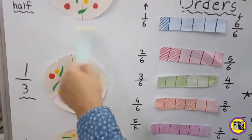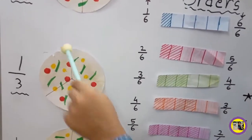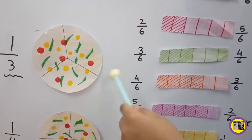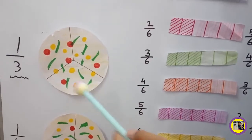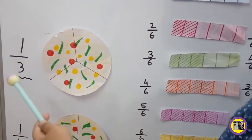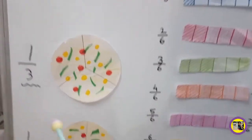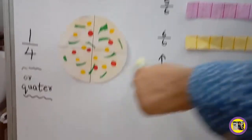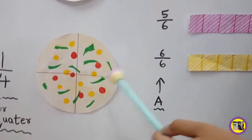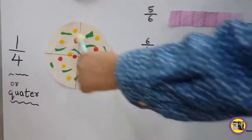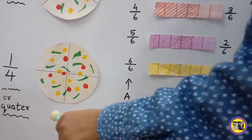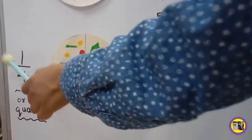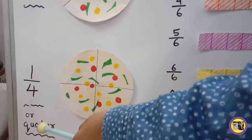This is a pizza. It is divided into 3 parts. It is called 1 upon 3. This is a pizza. It is divided into 4 parts. It is called 1 upon 4, or quarter.